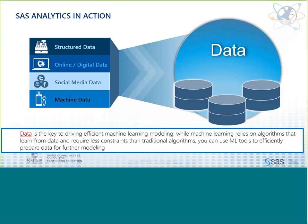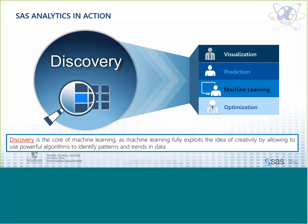SAS can provide all three capabilities. SAS offers faster data access, which is fundamental to any machine learning application. Data can come in any shape — structured data from ERPs, online and social media data, or device-generated data from sensors and mobile phones. In the machine learning discovery phase, you can deploy predefined or new algorithms for prediction, optimization, and many other applications.